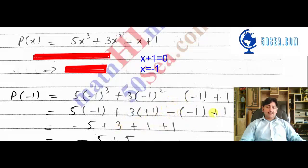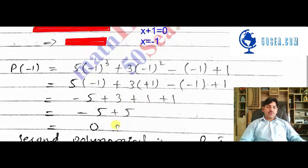This equals negative 5 plus 3 plus 1 plus 1. So negative 5 plus 5 cancels out and the answer is zero.